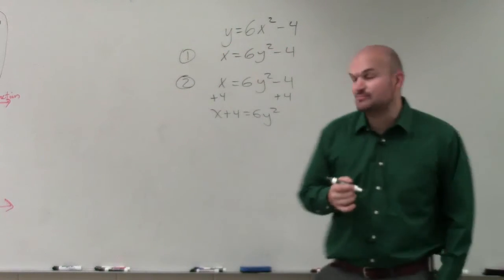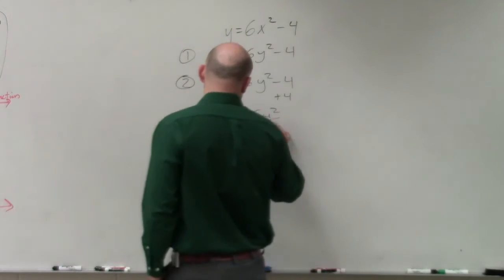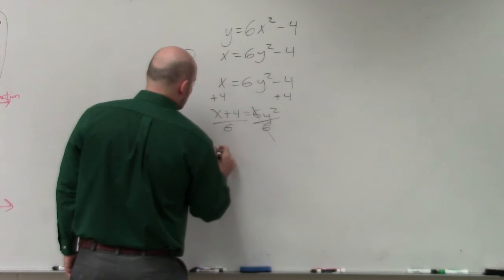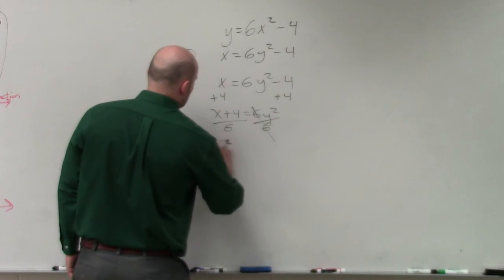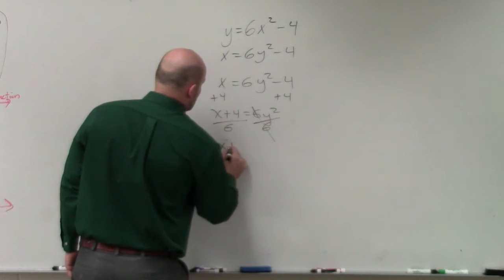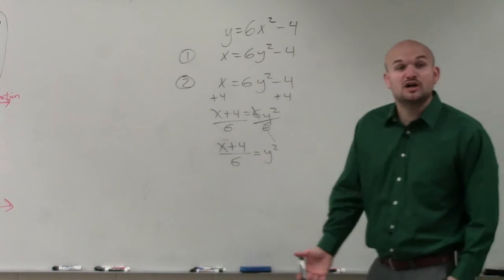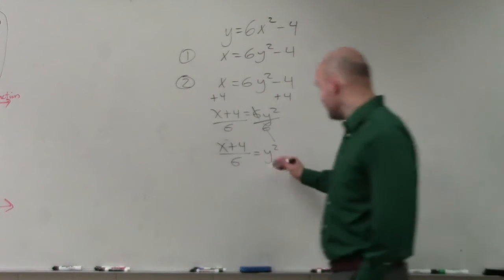Then I need to undo multiplication by a six, so I'm going to divide by six on both sides. So therefore I have y squared, x plus 4 divided by 6 equals y squared. Now I need to undo the squaring, so I have to introduce the square root.